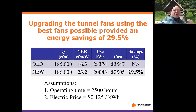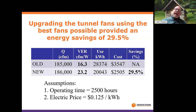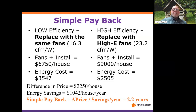The choice was: replace with old-style fans at VER 16.3 — similar to what they already had — or buy the most efficient fans that provide essentially the same airflow with a VER of 23.2. That higher VER is what delivered the 29% savings projection. However, the fan dealer had fans in stock from the same brand that only just met or slightly exceeded the ASABE number of 17.6, so we evaluated that option as well.